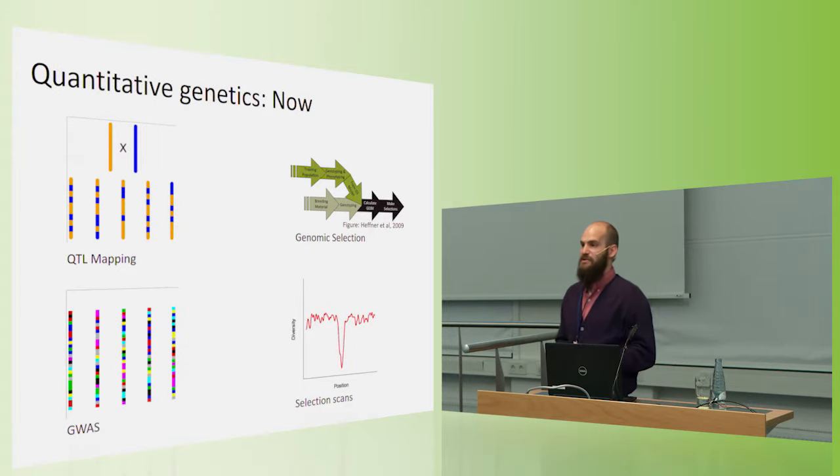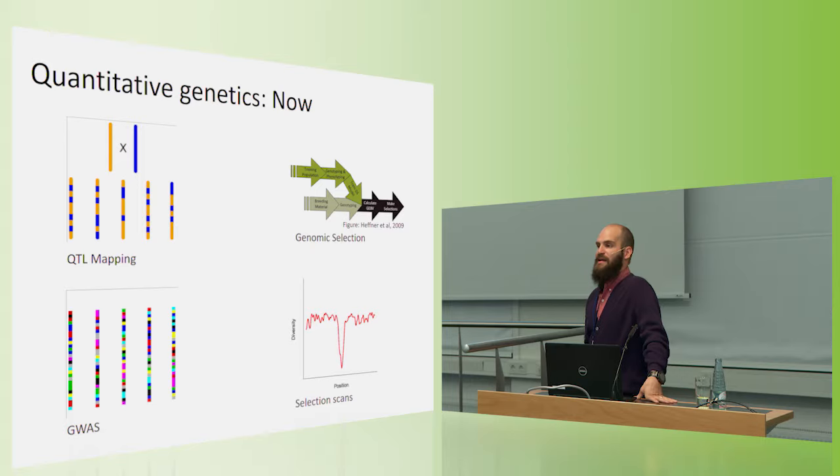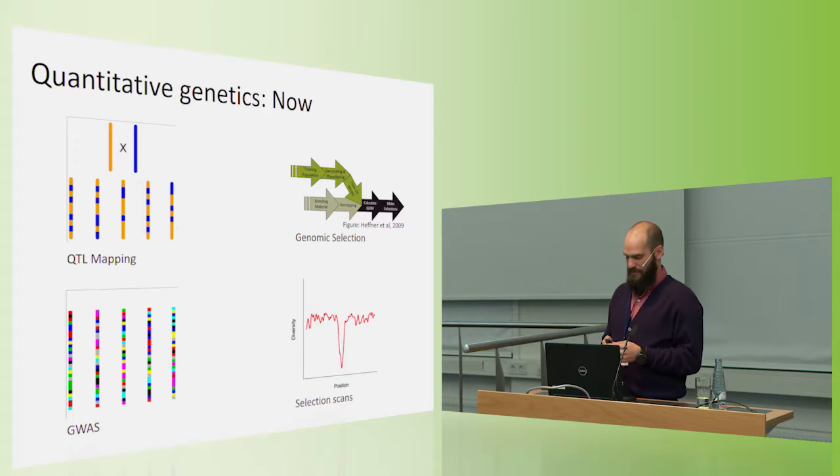In the present, we use a lot of genetic and genomics tools like QTL mapping, genome-wide association studies, genomic selection, and more recently, selection scans to understand links between genotypes and phenotypes.